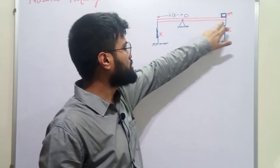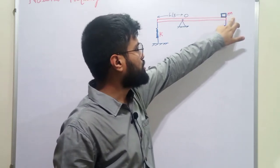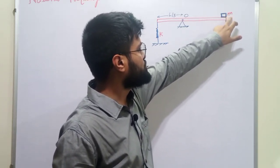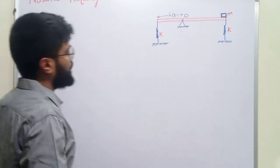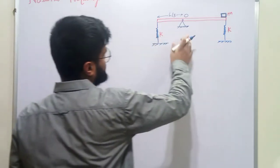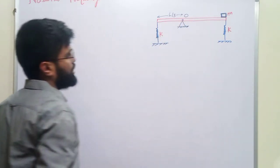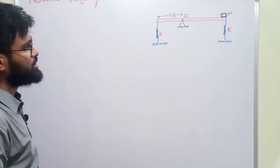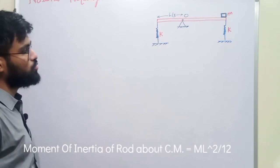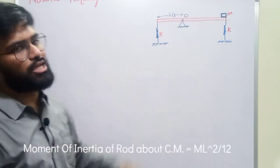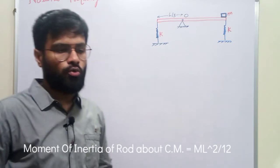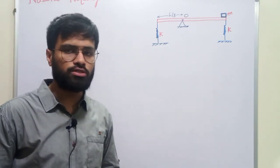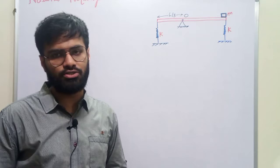We have a small mass m placed at the end of the rod, and the rod is hinged at O which is at a distance of L/3 from the free end. We have to find out the natural frequency for this system.